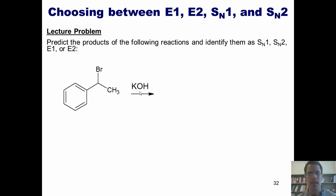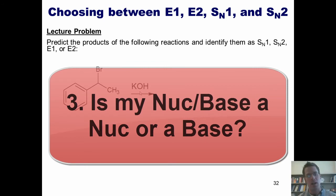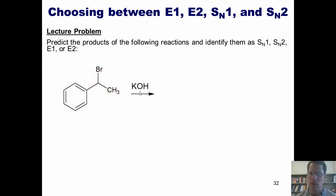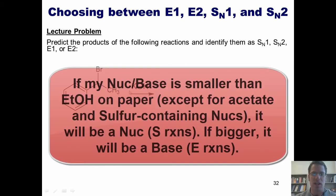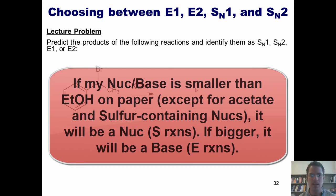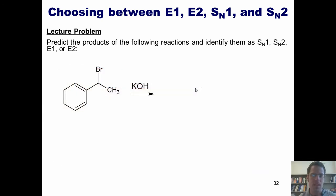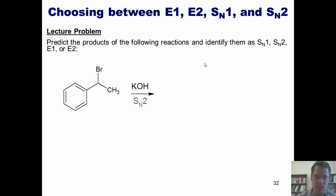That takes us to question number three: is my nucleophile/base a nucleophile or is it a base? If this nucleophile/base — in this case hydroxide — looks smaller than ethanol when I draw it on paper, it will behave more like a nucleophile than a base in a substitution/elimination scenario. The exceptions are acetate or nucleophile/bases that have sulfur in them, which will behave as nucleophiles even if larger than ethanol on paper. Hydroxide is smaller, so it will behave as a nucleophile and favor an SN2 pathway.